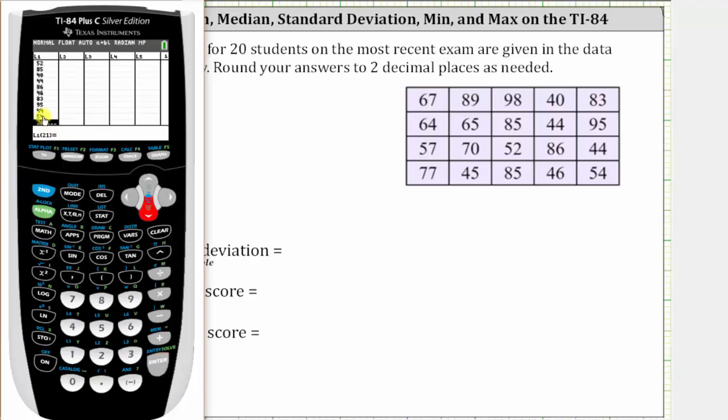Once done, I like to go back up to the last data entry. Notice how in parentheses it shows 20, which means that I've entered 20 data values, which does match the number of data values given. And now we go back to the home screen by pressing 2nd MODE for QUIT.